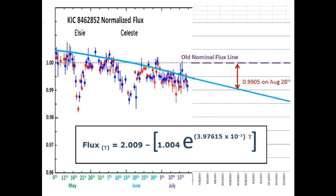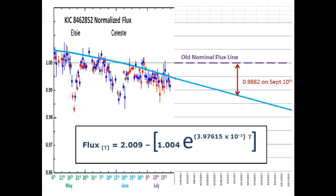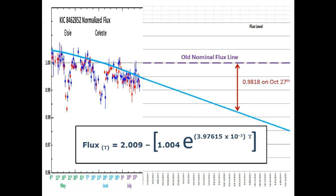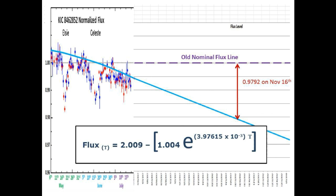This is the equation of the long-term accelerating dimming curve of Tabby's Star, and it is our best fit to the data we have so far. Using this equation, you can clearly see that the difference between the old static nominal flux line and the accelerating downward movement of the long-term dimming curve is getting larger and larger — eventually the old nominal flux line will have to be lowered to be relevant.